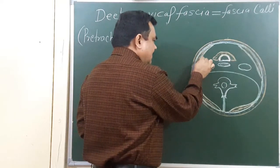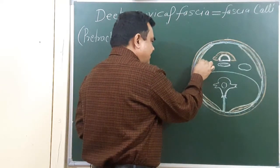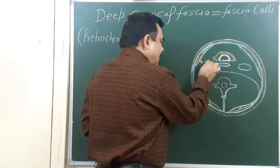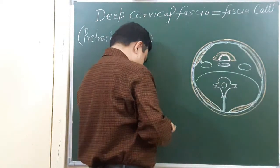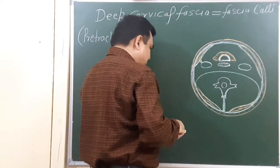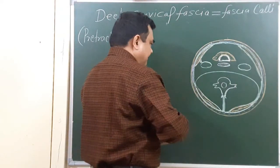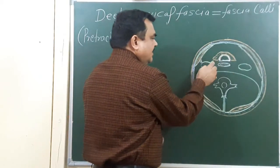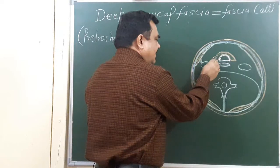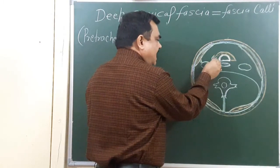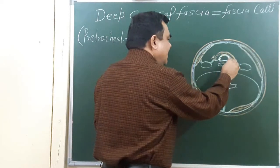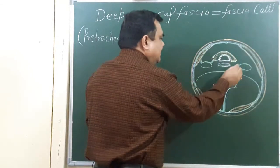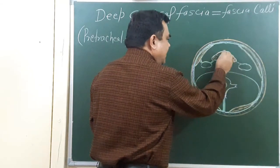From the deep layer, an extension passes to the medial side and forms the anterior sheath of the anterior part of the carotid sheath. This is the carotid sheath. From here, this extends towards the thyroid gland, and here this fascia splits and encloses the thyroid gland. This is the pre-tracheal fascia which splits and encloses the thyroid gland, and continues with the opposite side.